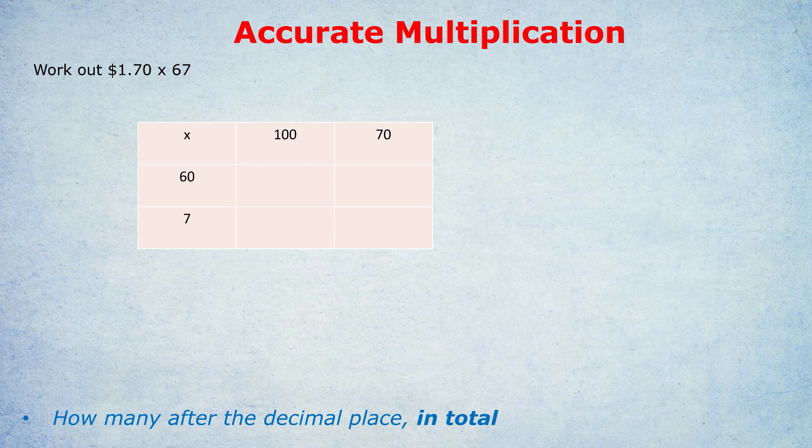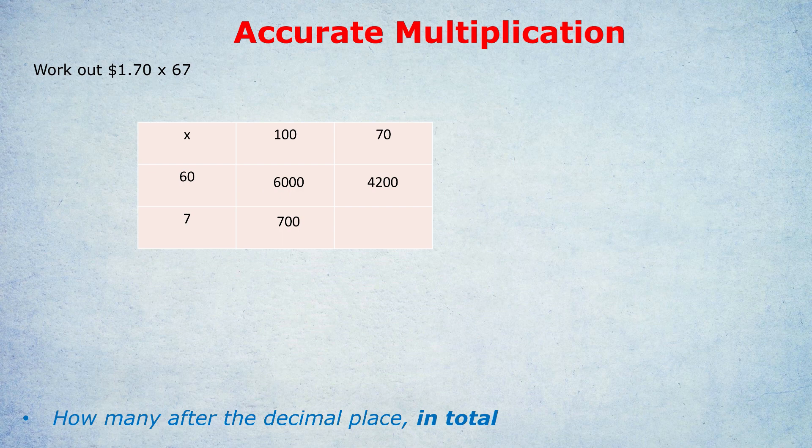170 split up as 100 and 70, and 67 split up as 60 and 7. Showing off our method: 1 times 6 is 6 with 3 extra zeros. 6 times 7 is 42 with 2 extra zeros. 7 times 1 is 7 with 2 extra zeros. 7 times 7 is 49 with 1 extra zero. What do we do then? We add them up in a nice neat column.